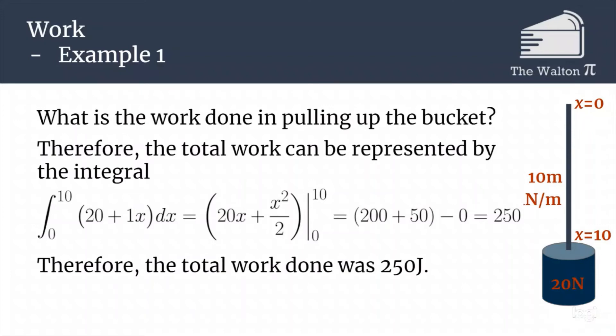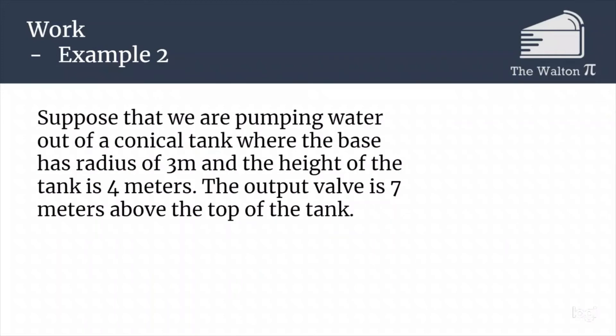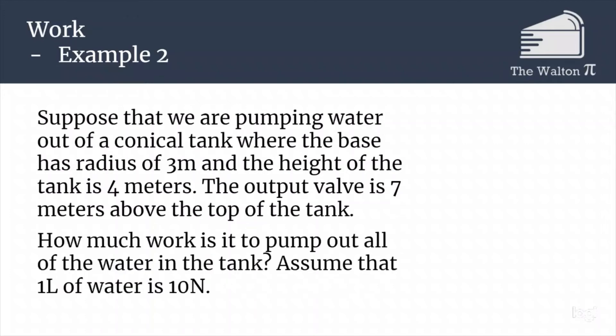Another problem that is a slightly different setup but a similar process in logic to figure out the different pieces is going to be if we are pumping water out of a tank. Let's suppose that we are pumping water out of a conical tank where the base of the tank has radius 3 meters and the height of the cone is 4 meters. The output valve, where we are pumping the water to, is 7 meters above the top of the tank. How much work would it be to pump out all of the water that's in the tank? We are going to assume that 1 liter of water is 10 newtons. It's not a perfect approximation but it's about 9.8 newtons, so 10 newtons is going to just make the problem a little bit easier to compute for the example.